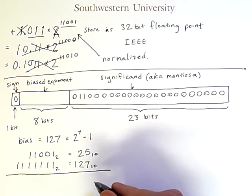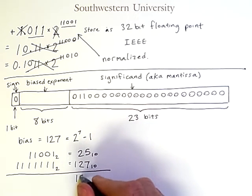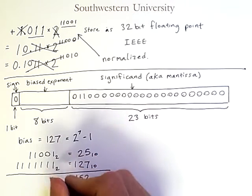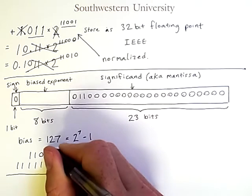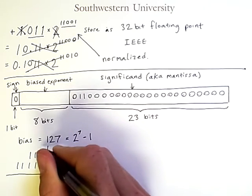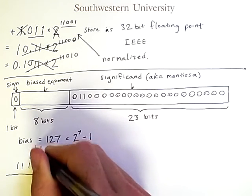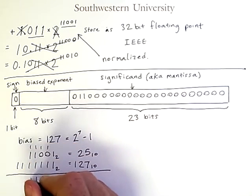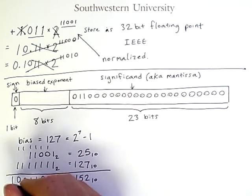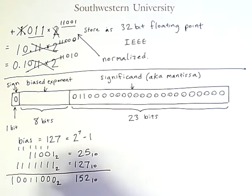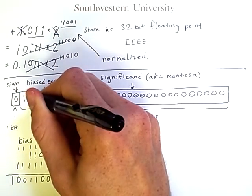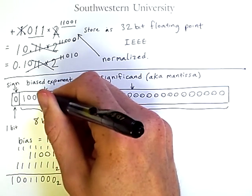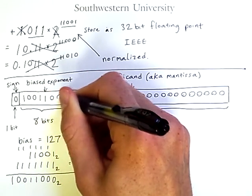Adding 127 — which in binary is seven 1s — to 25 gives a result of 152. In binary, that works out to 10011000. So here we have 8 bits, and these are the 8 bits that go into the biased exponent field: 1, 0, 0, 1, 1, 0, 0, 0.